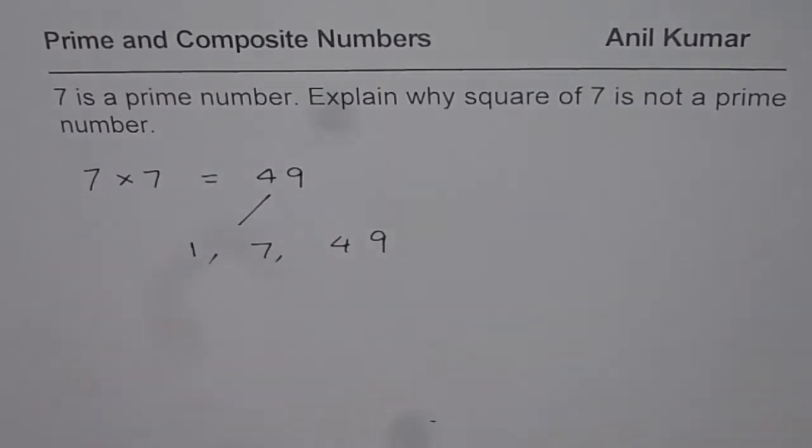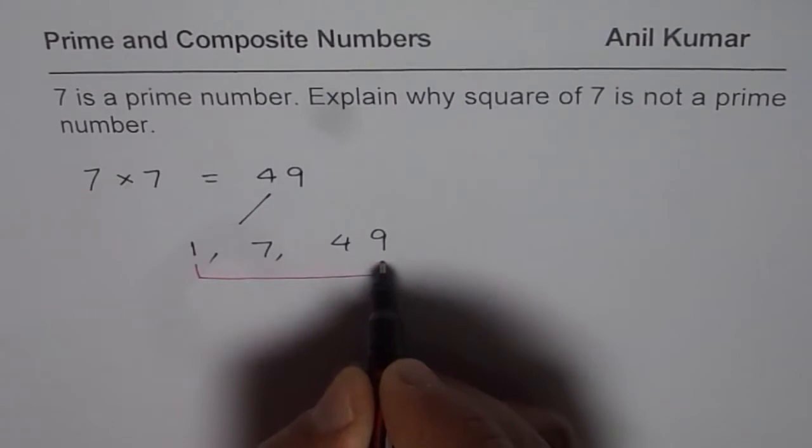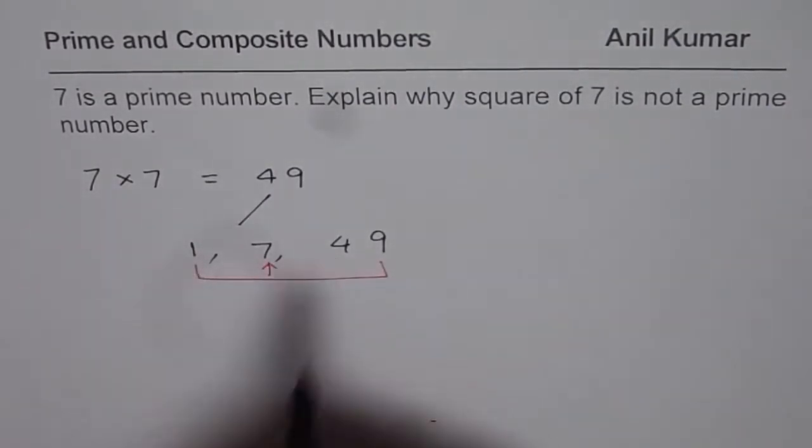As you can see, we have more than 2 factors: 1, 7, and 49. Since we have more than 2 factors of this number, it cannot be prime.